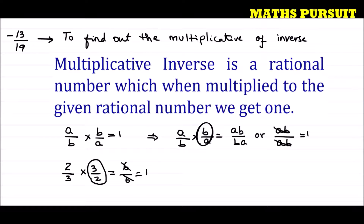Now, if the question has given us minus 2 upon 3, the multiplicative inverse of minus 2 upon 3 will be 3 upon minus 2, because if we multiply them we will get minus 6 upon minus 6, which equals 1.